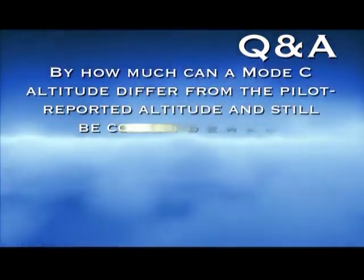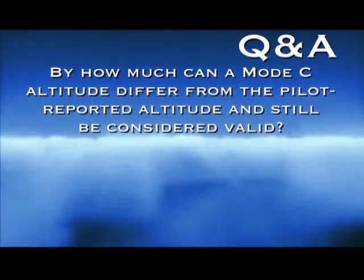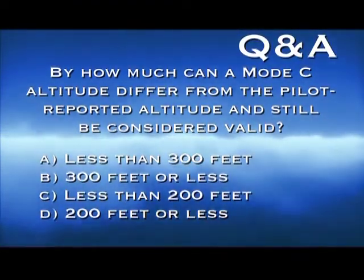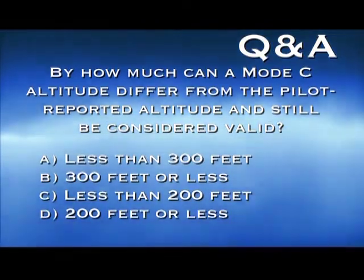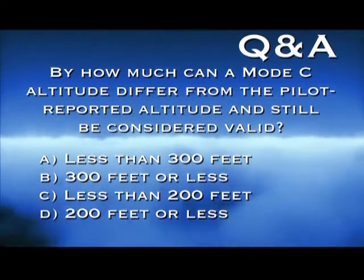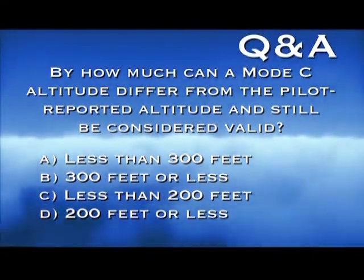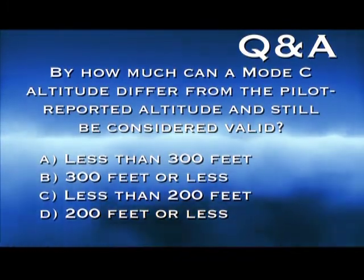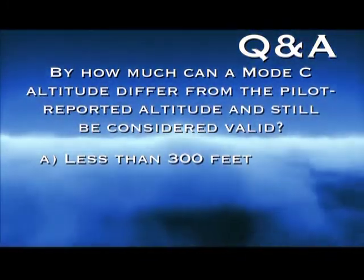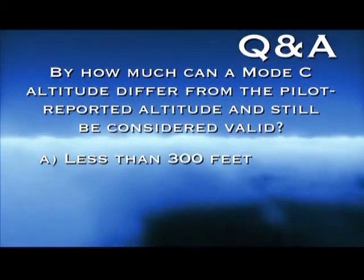By how much can a Mode C altitude differ from the pilot reported altitude and still be considered valid? A, less than 300 feet. B, 300 feet or less. C, less than 200 feet. D, 200 feet or less. The answer is A. The pilot reported altitude must differ by less than 300 feet in order to be considered valid.